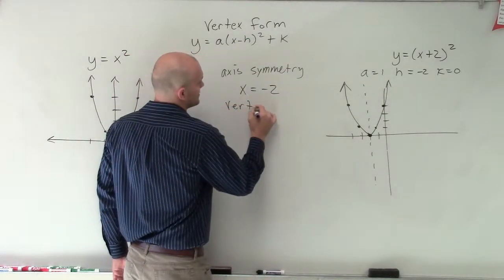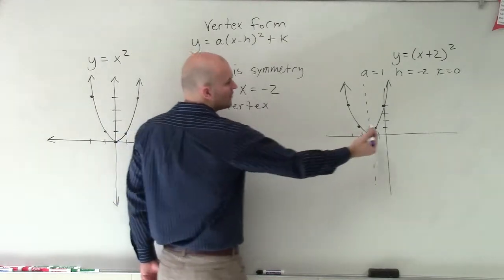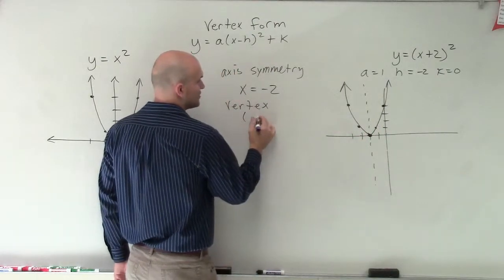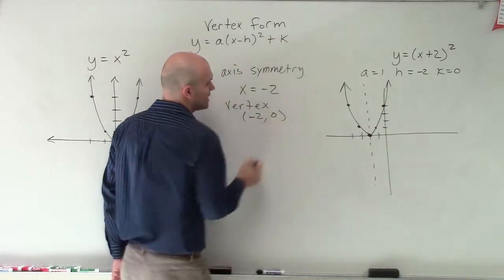Now, my vertex, the point that I moved, shifted over, is now shifted over two units. So therefore, that's at negative 2 comma 0.